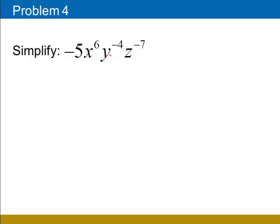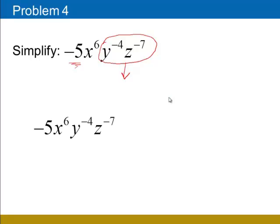This problem shows the properties of negative exponents. I have two bases that involve negative exponents: y to the negative 4th and z to the negative 7th. These two bases are going to have to move to the denominator with a positive exponent. Watch out for the coefficient negative 5 — although we move negative exponents, we do not move negative numbers. The negative 5 will stay put in the numerator. So our result is negative 5x to the 6th in the numerator, and y to the 4th, z to the 7th in the denominator.